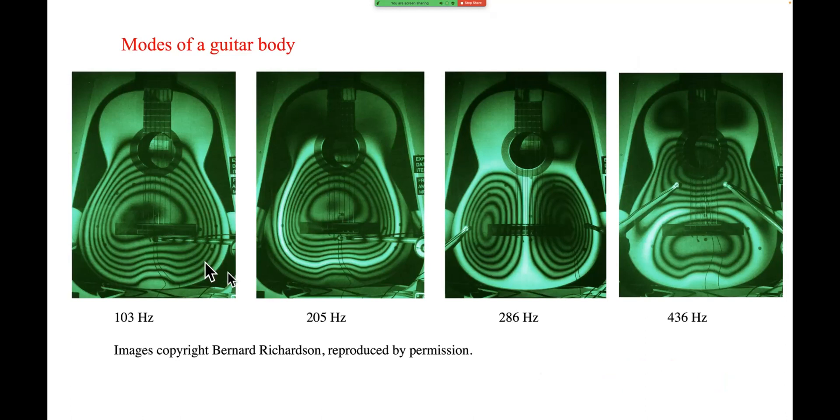Here are some measurements of the first few vibration modes of a guitar body, courtesy of my friend Bernard Richardson. Now these are being visualized by a technique involving lasers and holograms. And essentially what this image shows you is a contour map of the displacement shape. So you see all these ring-shaped contours here. That's showing a hill or a valley. The whole of the top of the guitar is bulging up and then bulging down in that vibration mode.